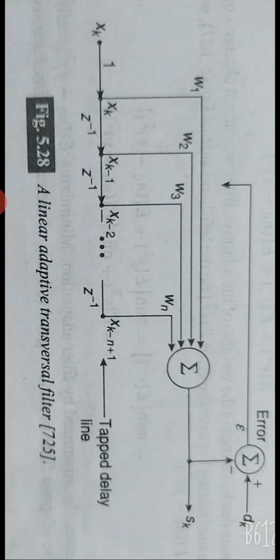The tapped delay line filter takes n number of inputs — x(k), x(k-1), and x(k-2) — which are given to a summing element, generating an error signal e(k). A reference input d(k) is also fed in. This is very similar to supervised learning, where n signal samples are input to the adaptive linear combiner.